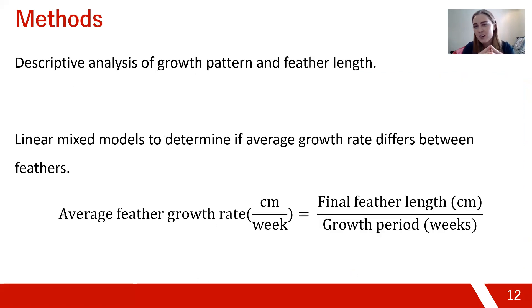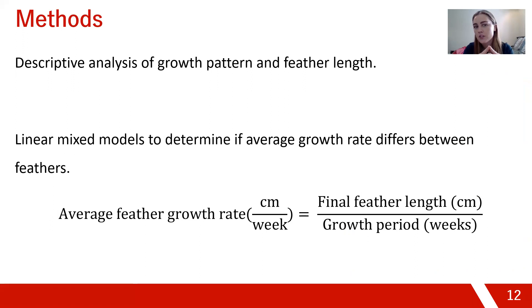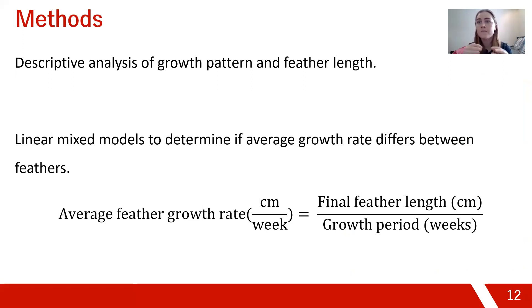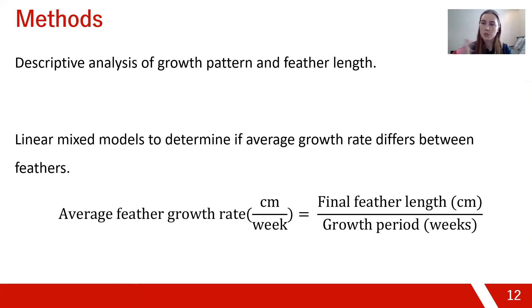For presenting results, we did a descriptive analysis of growth pattern and feather length over time. We also used linear mixed models to determine if average growth rate differs between feathers. Average growth rate was calculated by taking the final feather length divided by the total growing period to get an average across those 20 weeks, then we tested for significant differences in average growth rate between our 10 primary feathers.